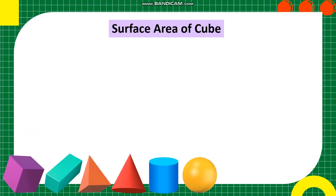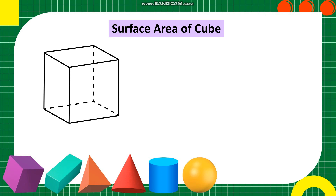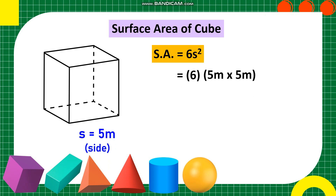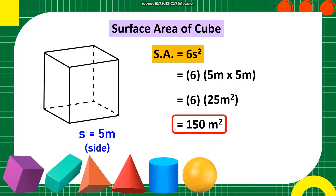Surface area of a cube. We have here the figure of a cube whose side measures 5 meters. To get the surface area of the cube, we use the formula: Surface area equals 6 times side squared. That is 6 times 5 meters times 5 meters, which is 6 times 25 square meters. The answer is 150 square meters. This is the surface area of the cube.